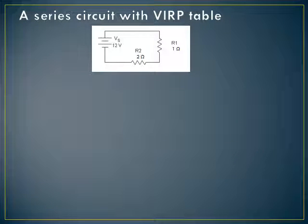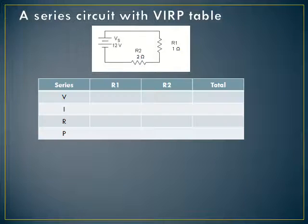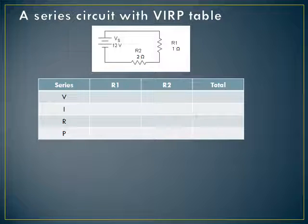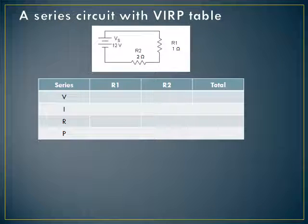We're going to make a VERP table with a series circuit and talk about why all the values make sense. Here's a series circuit — the resistors are back to back, and I've given those resistors values so we can plug them into our table. The table will have three columns: one for R1 (my first resistor), one for R2 (my second resistor), and a total column for the voltage, current, resistance, and power values for the whole circuit — basically what's happening at the battery.